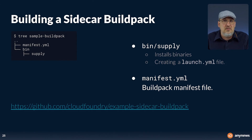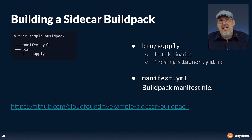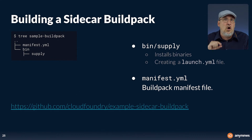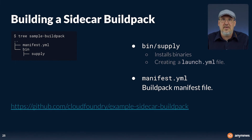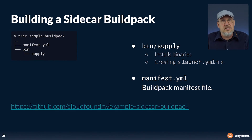Building a sidecar buildpack is not that hard. The simplest form contains at least a supply script in the bin folder. This script installs all needed components parallel to the main process within the application container during the supply phase. The script can also create a launch.yaml file, which is responsible for starting the sidecar process automatically based on some conditions. If you create the launch.yaml file, the sidecar section in the application manifest becomes obsolete — you just have to mention which sidecar buildpack to use.